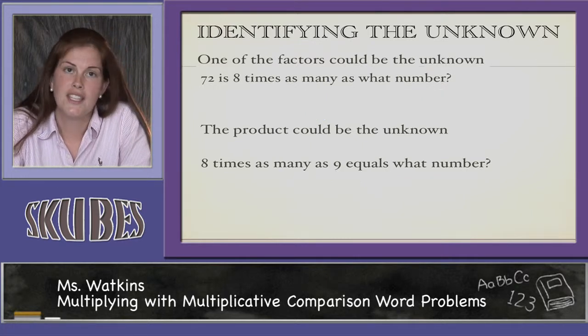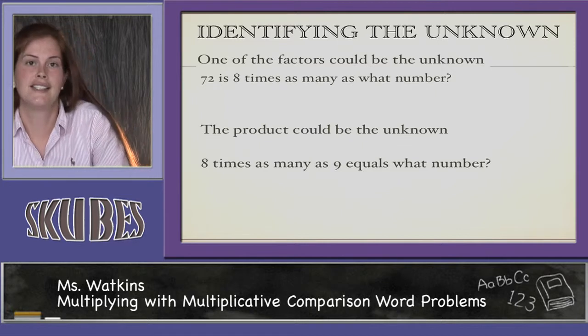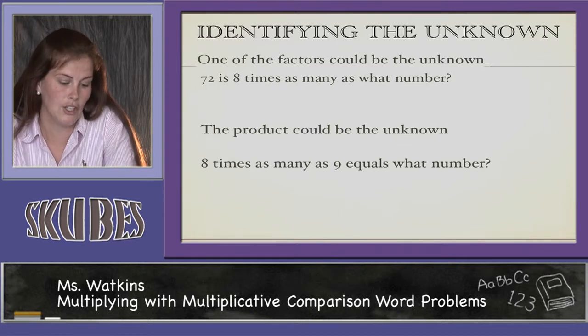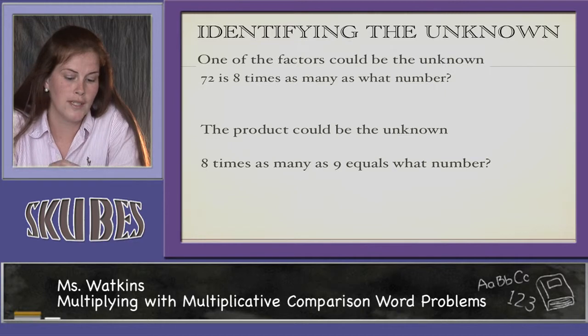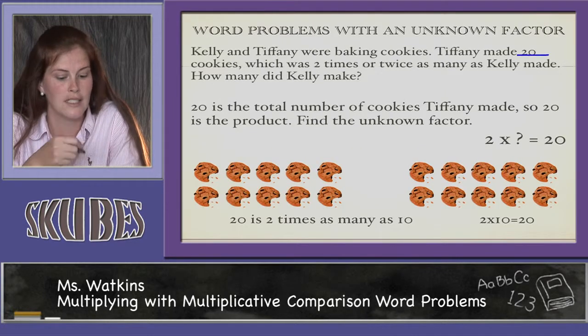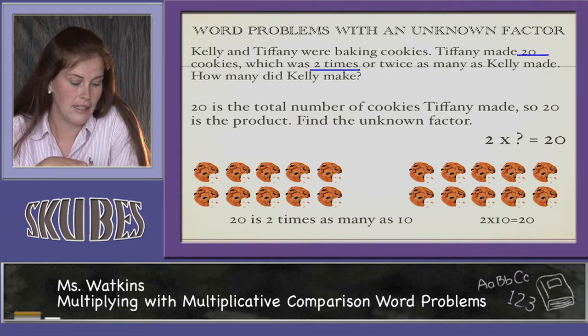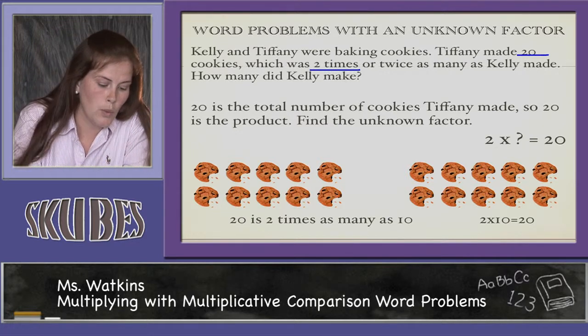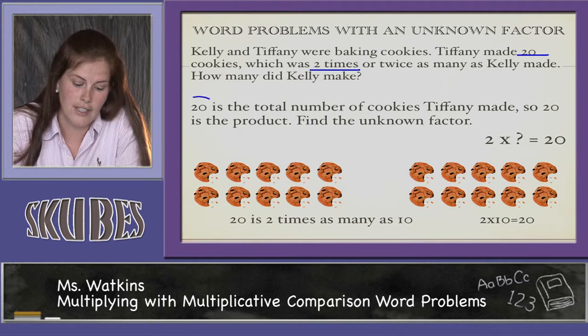Word problems with an unknown factor. Here's an example. Kelly and Tiffany were baking cookies. Tiffany made 20 cookies, which was 2 times or twice as many as Kelly made. How many did Kelly make?